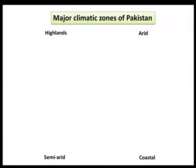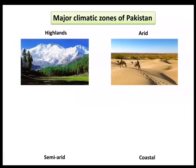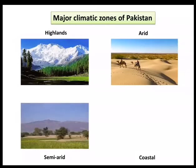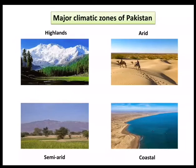Pakistan is a country which has a variety of landforms. It is located in the temperate climatic zone, which is neither too hot nor too cold. It has four climatic regions: highlands, arid, semi-arid, and coastal region.